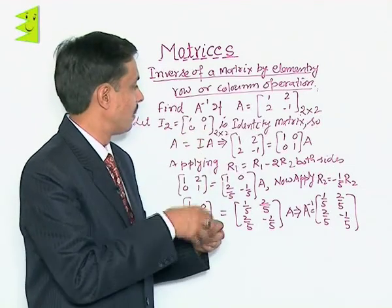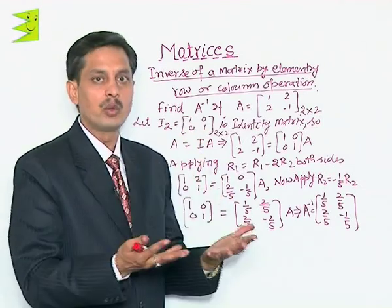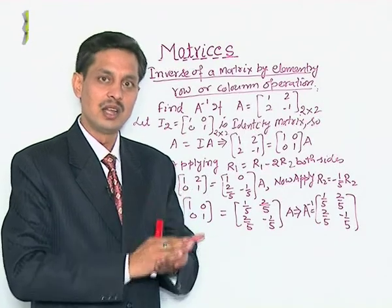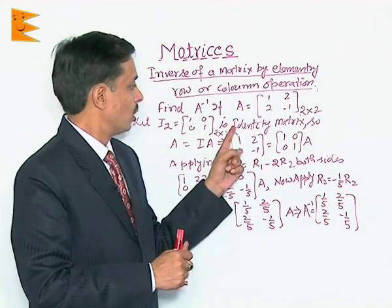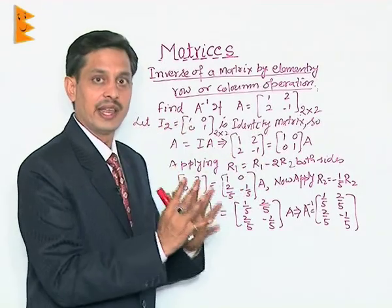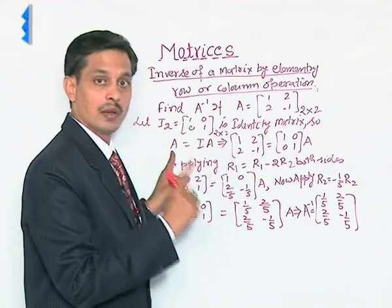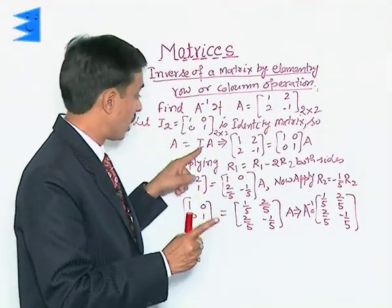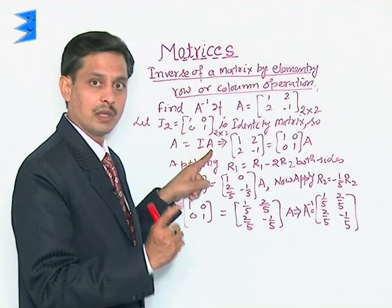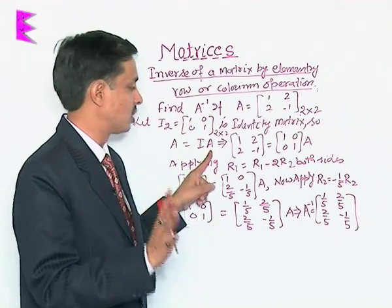The property of identity matrix is when it is multiplied to any matrix, the result of the matrix remains same. So, what I can write is matrix A equals identity matrix into A because when identity matrix is multiplied result remains same.